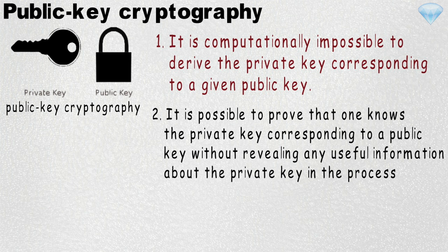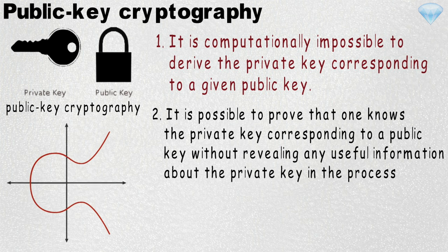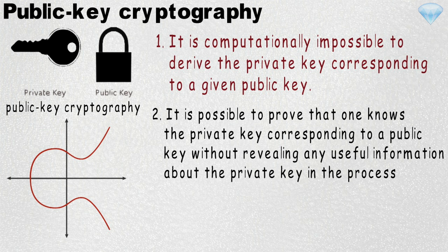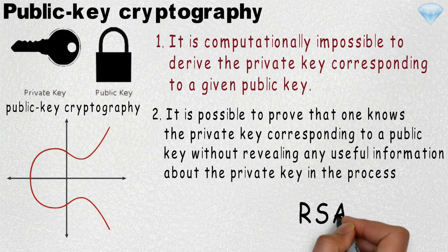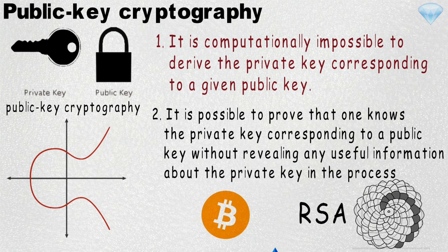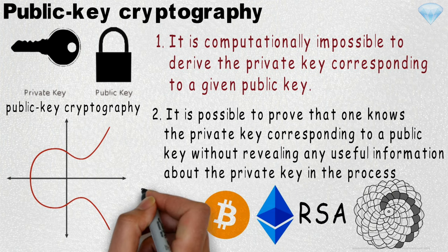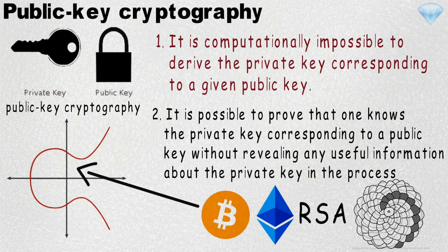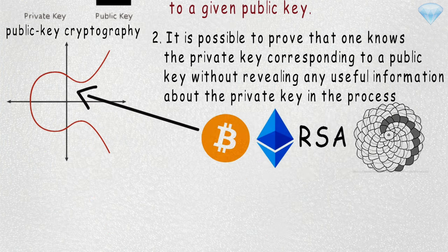One way to do public key cryptography is with elliptic curves. Another way is with RSA, which revolves around prime numbers. Most cryptocurrencies like Bitcoin and Ethereum use elliptic curves.